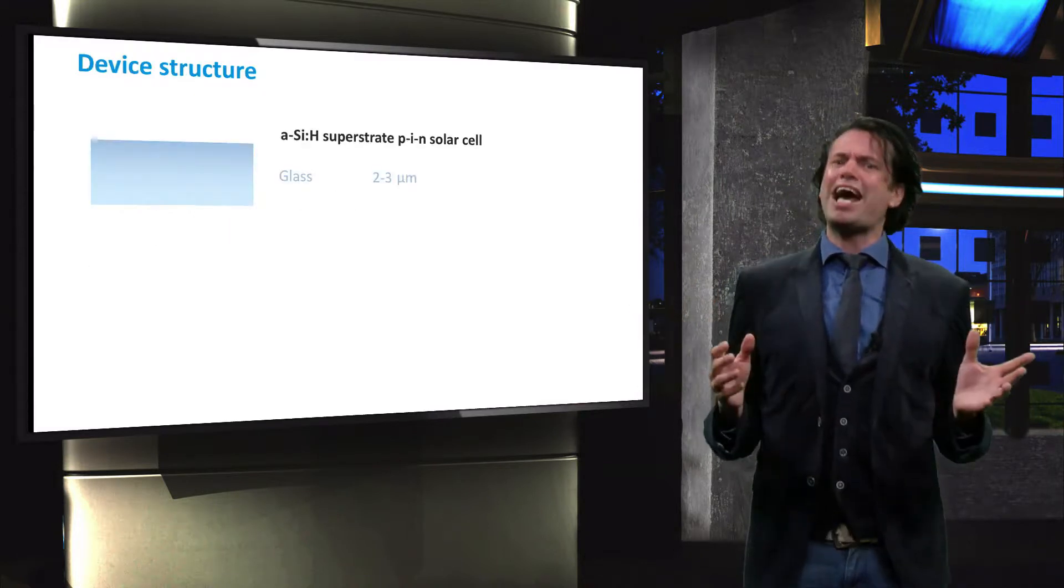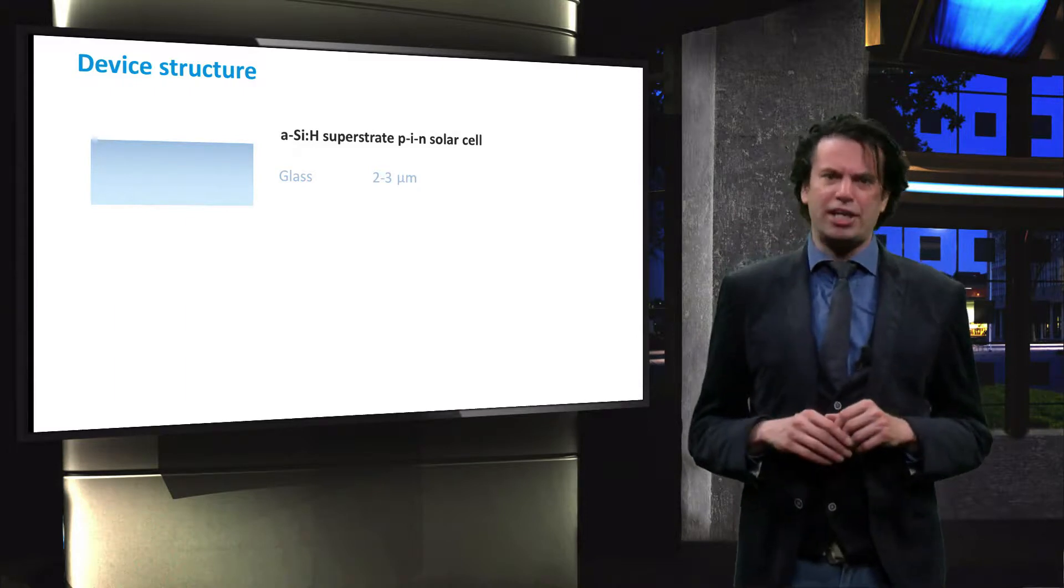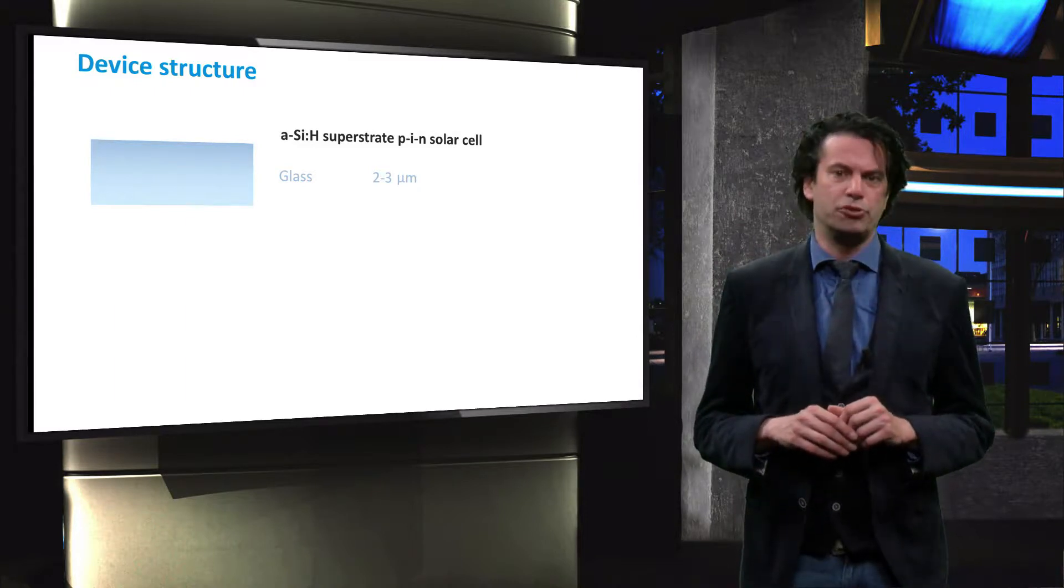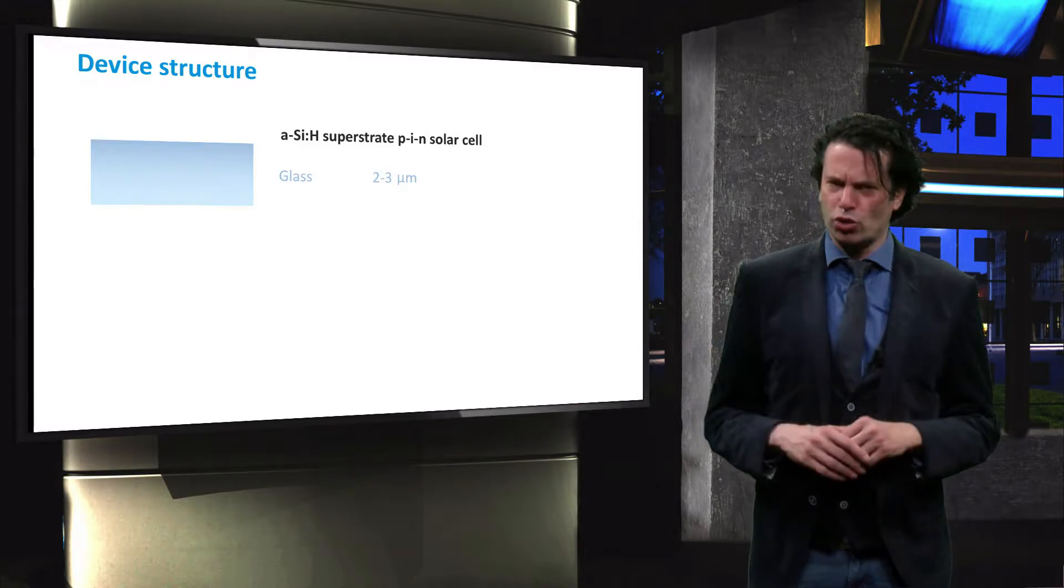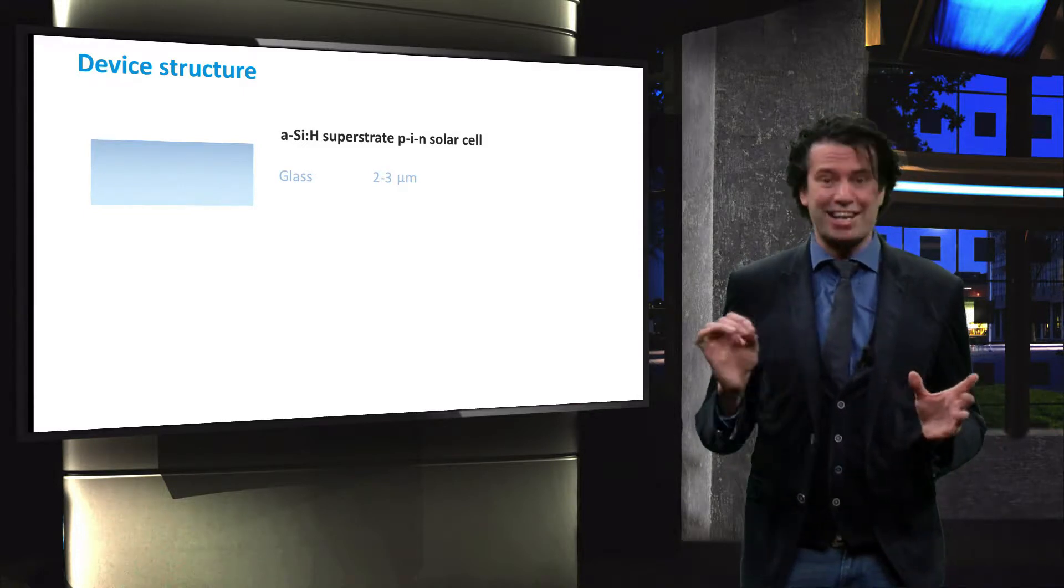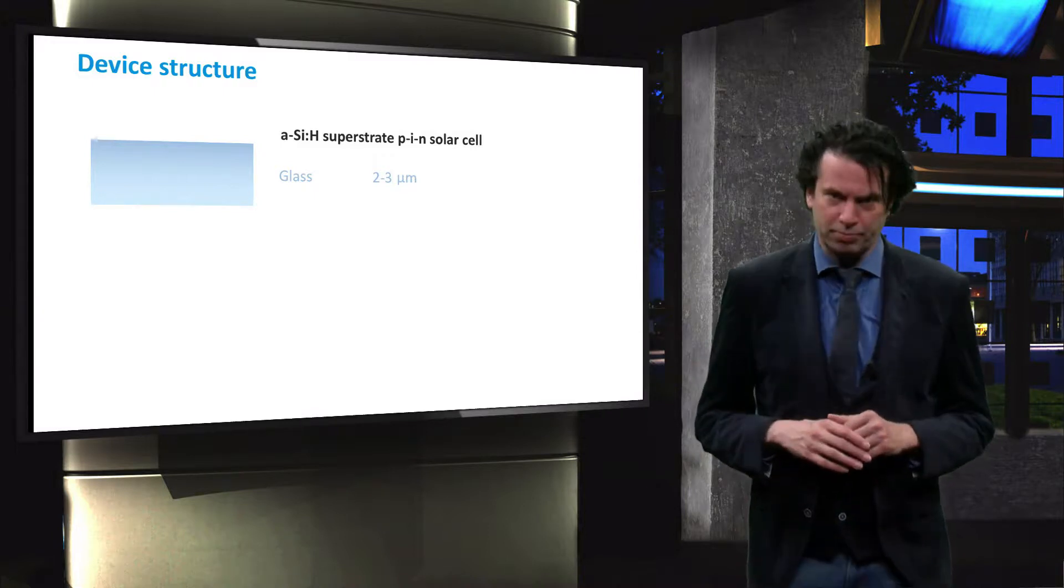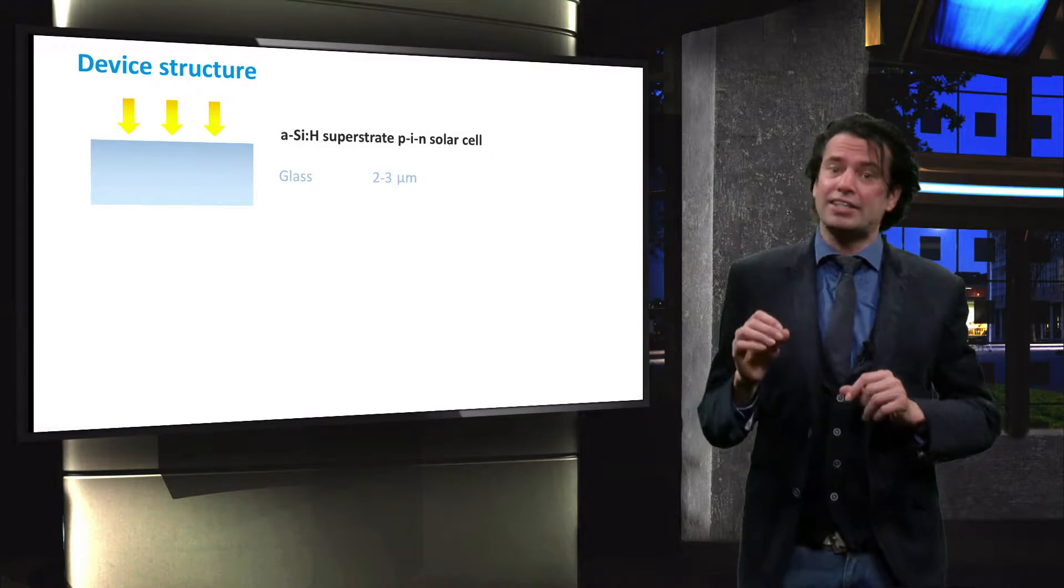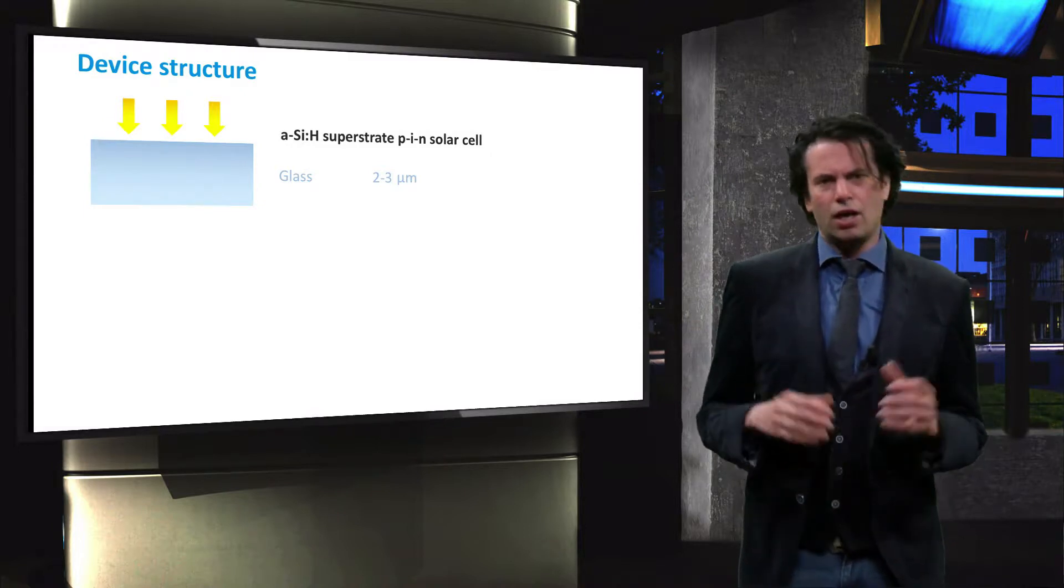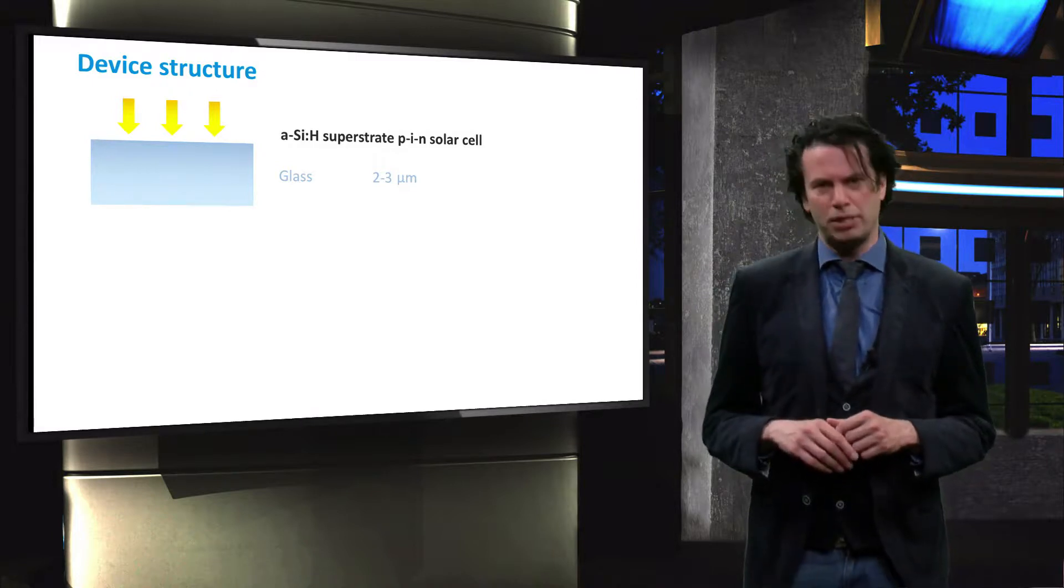We will look at a typical amorphous silicon solar cell, as produced in our research group at the TU Delft. Such a solar cell is deposited in a superstrate PIN configuration, so with a transparent substrate, which is the first layer that incident light encounters. A glass substrate is used with a thickness of 0.7 to 1.5 mm.